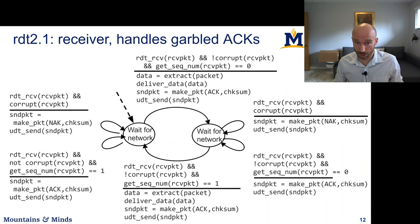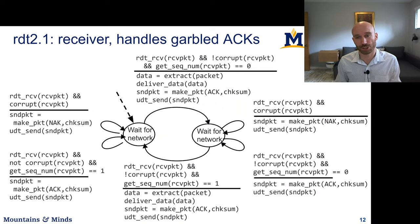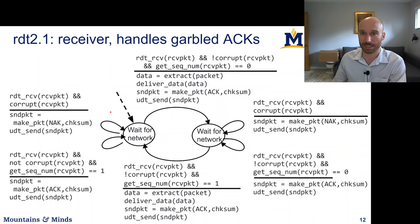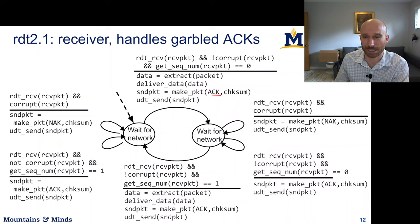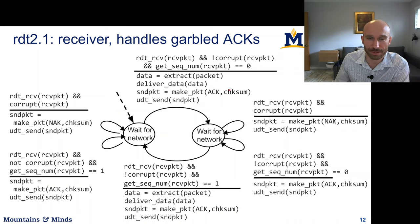Let's look at the receiver actions, which are also kind of symmetric. The first thing the sender did was send a packet with sequence number zero, so the receiver is waiting for input from the network. If a packet is received and it is not corrupt, and we verify the incoming sequence number is zero, then we extract the data from the packet, deliver data, and send a packet which is an acknowledgement. That acknowledgement also includes a checksum, allowing the sender to determine if this packet was corrupt. Then we call udt_send to send the acknowledgement.